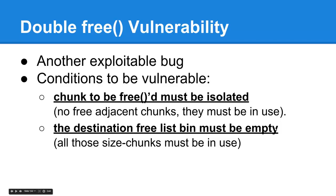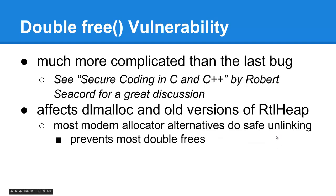That means that free list for that bin size must have every single bin allocated. There can be no free bins. In this case, it's a bit more complicated to exploit and to understand. The secure coding in C and C++ offers a great discussion into the particulars of this a little more deeper. It's important to note that it affects DLMalloc and some old versions of Windows RTL heap. Most modern allocator alternatives do safe unlinking that prevents double free exploitation. However, you can still exploit this today on modern Linux systems. It just depends on the allocator being used.